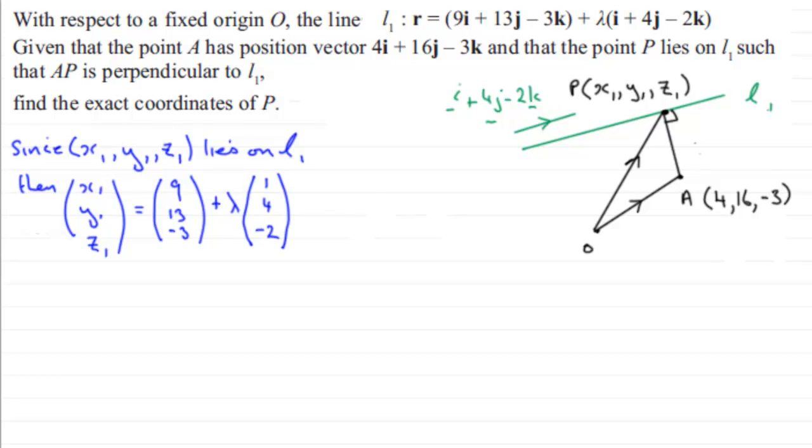Now what we can see from here is that we could build up the simultaneous equations. That is that x1 equals 9 plus lambda. We've also got on this second line here, when we compare the j components, we've got y1 equals 13 plus 4 lambda. And finally, if we compare the k components, we've got z1 equals minus 3 minus 2 lambda. Now we've got four unknowns, x1, y1, z1 and lambda. Four unknowns requires four independent equations. We've only got three so far, 1, 2 and 3.